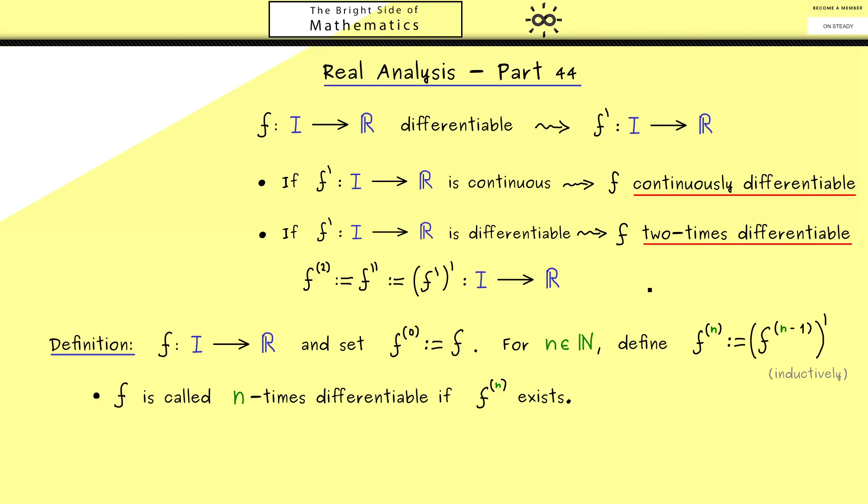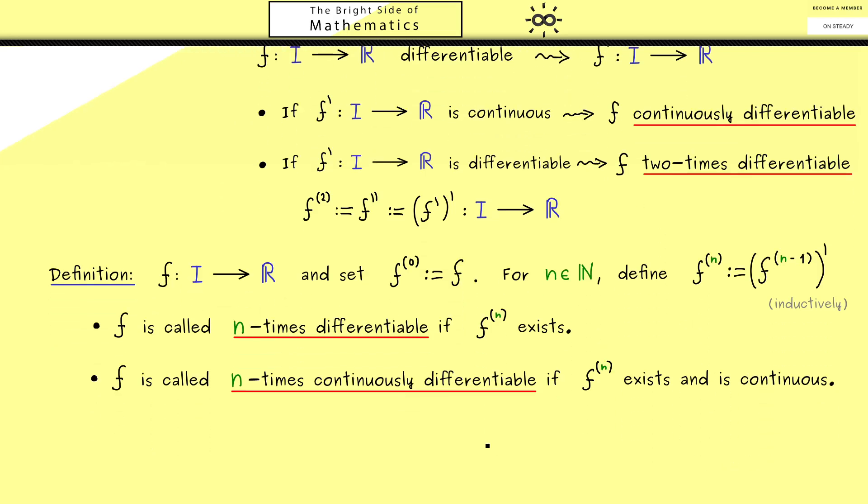Then the next step would be to generalize the term that f is continuously differentiable. Hence now we would say that f is n times continuously differentiable, and of course it just means that the nth derivative which should exist is also continuous. So you see all of this is not so complicated.